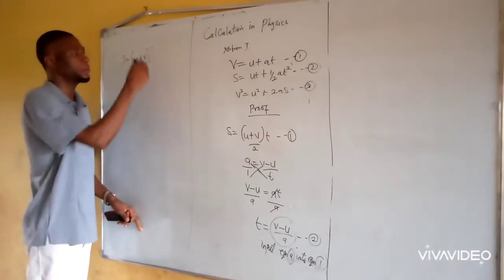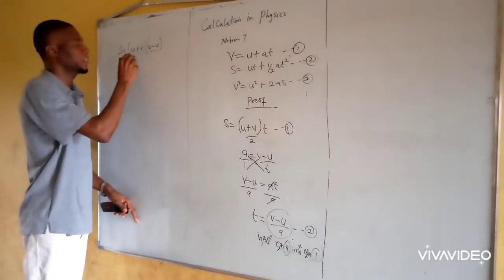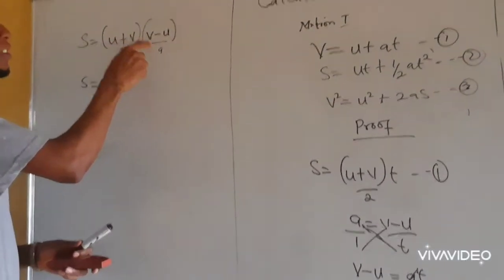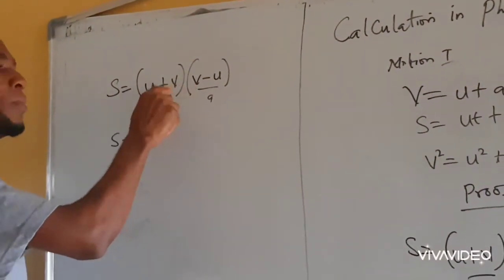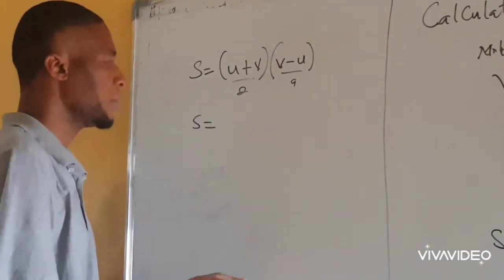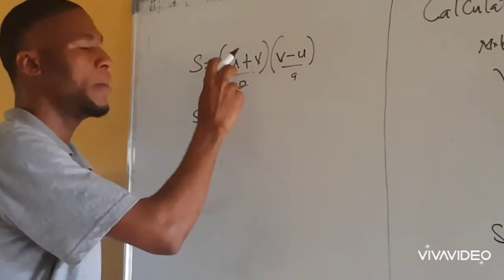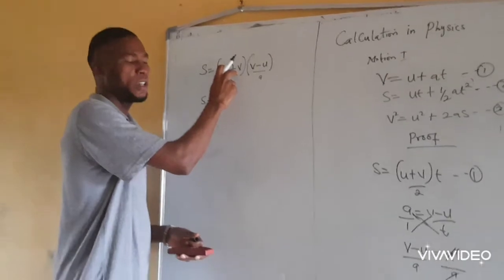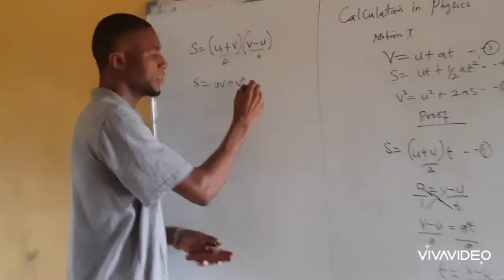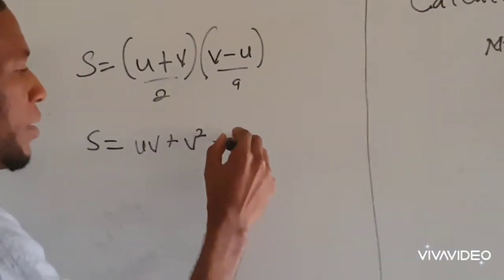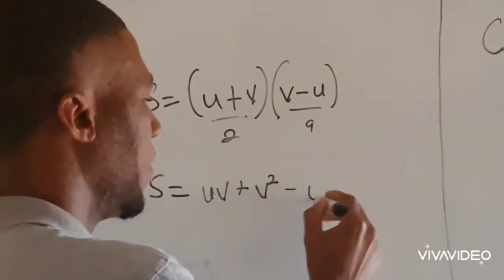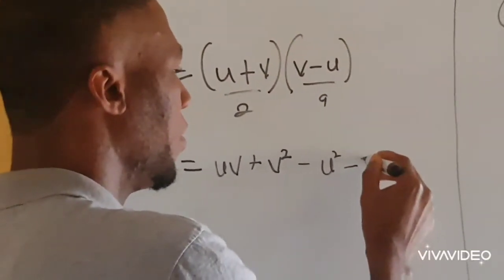Opening the bracket, we multiply through. V multiplied by v gives us v-squared; v multiplied by negative u gives us minus vu. Then u multiplied by v gives us uv, and u multiplied by negative u gives us minus u-squared. The denominator is 2a. Collecting like terms: uv minus vu cancels, leaving v-squared minus u-squared over 2a.